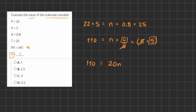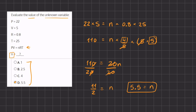Now in order to find the value of n we are going to divide by 20 on both sides. On the left-hand side we can cancel out the zeros by dividing by 10, and so we have 11 divided by 2 equals n, because these 20s will cancel out to 1. So 11 divided by 2 is going to be the value of n, but all of our answers are written in decimal form, so we need to convert this 11 divided by 2 into a decimal, and once we do so we get 5.5 equal to n. And so in our answers that is going to be answer D.